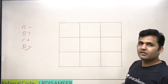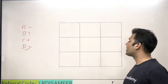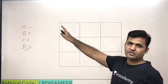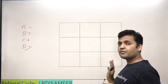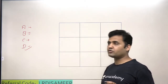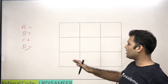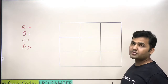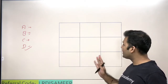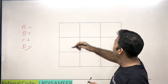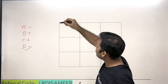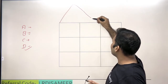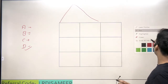Whenever you are making a four-set Venn diagram, the first step is to make a 3×3 matrix — that is, a matrix with three rows and three columns.